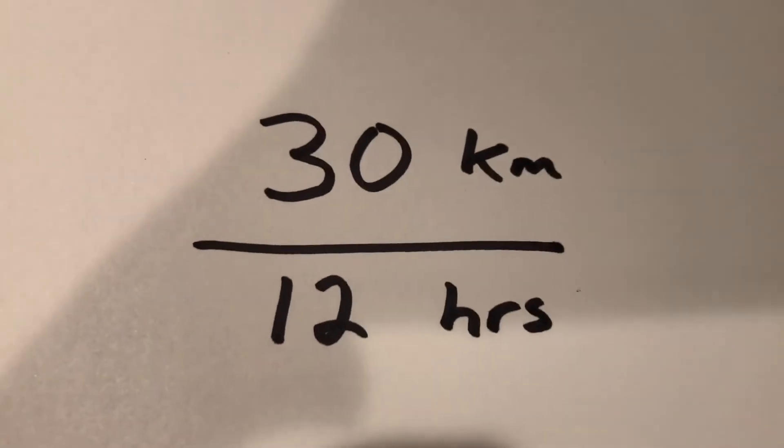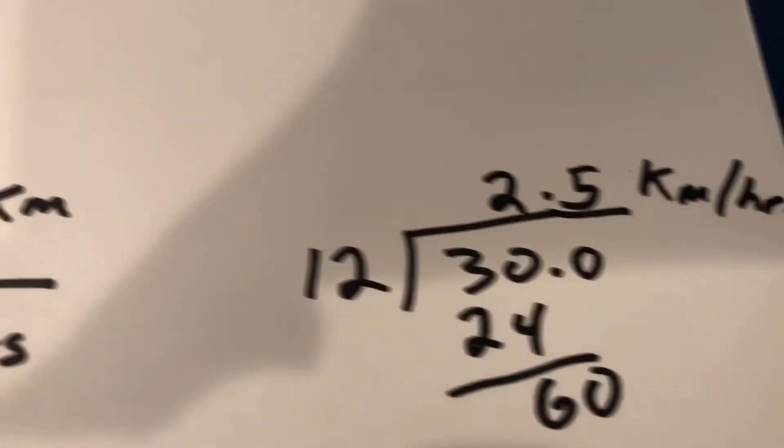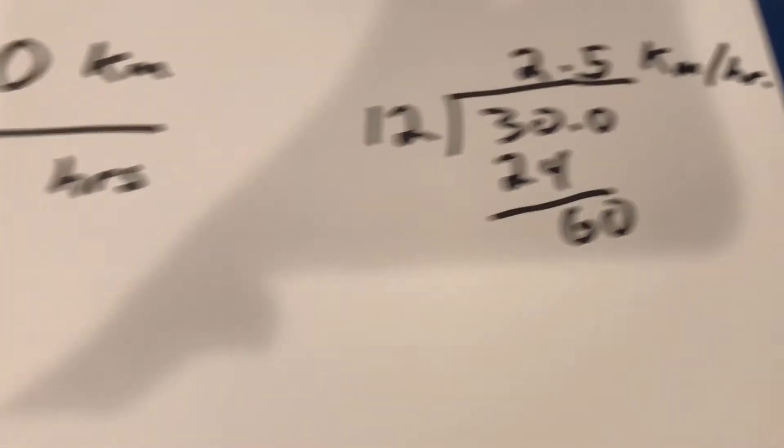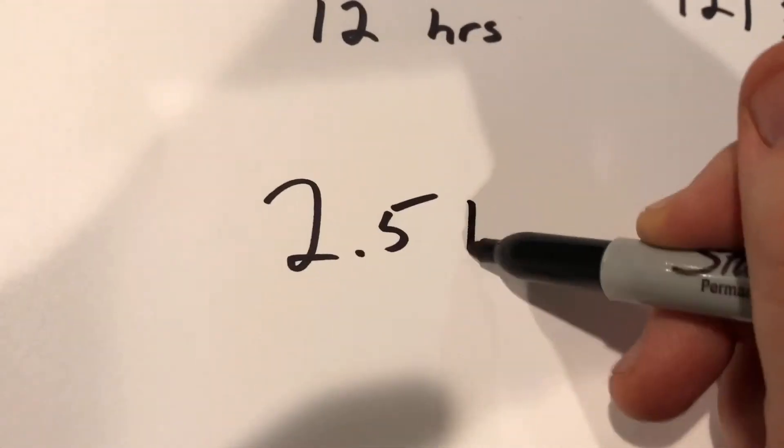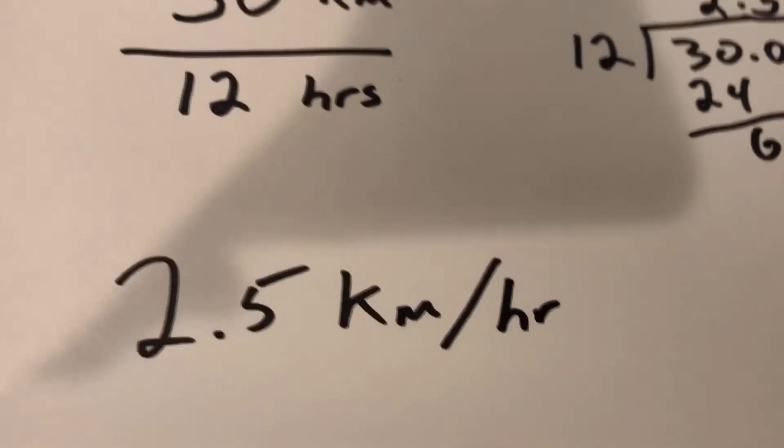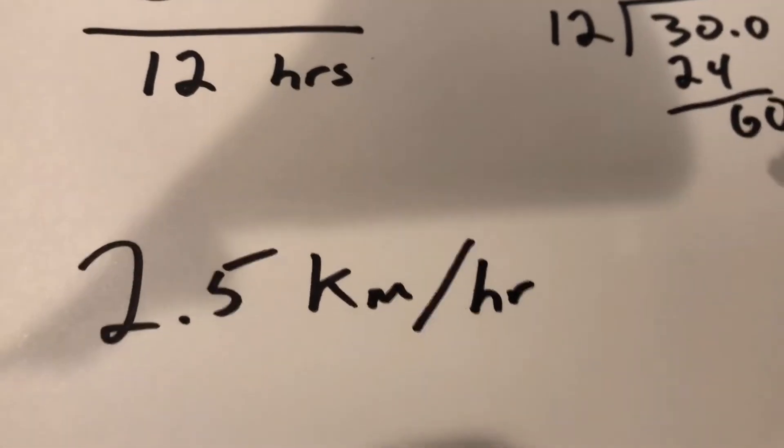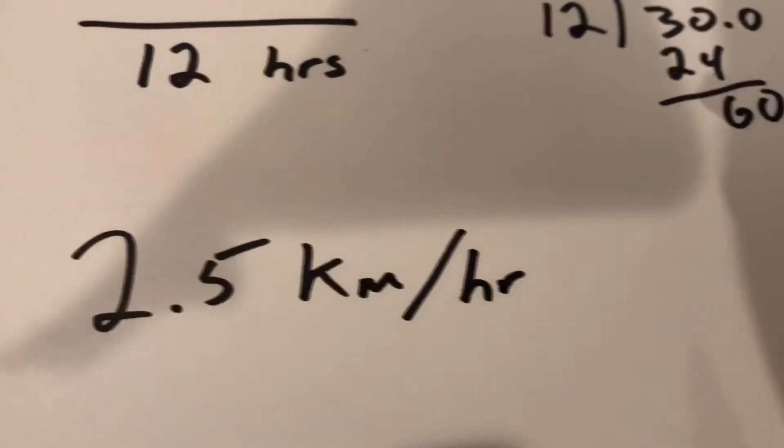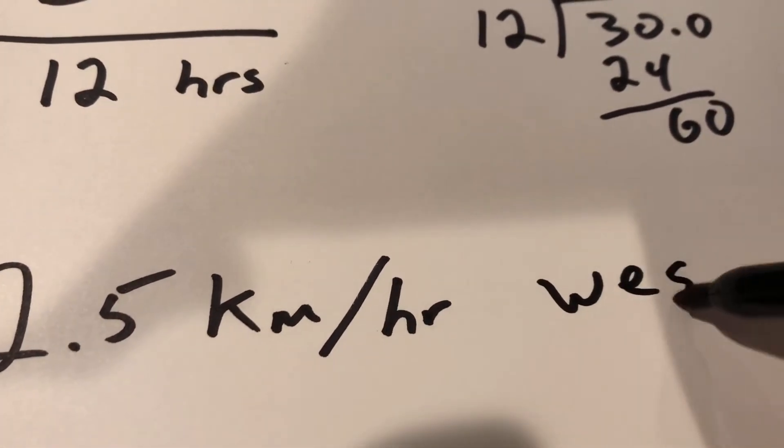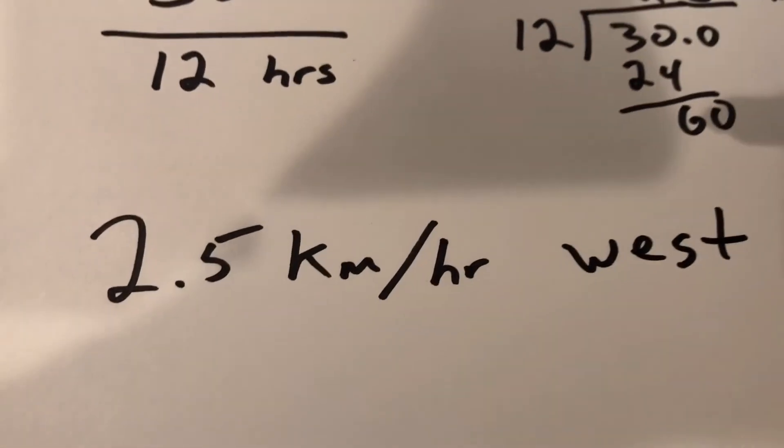If you travel 30 kilometers in 12 hours, you are walking at a rate of 2.5 kilometers per hour. That's your speed. Hold on. 2.5 kilometers per hour. Now that speed, if it were velocity, it would tell you the direction. Oh, you were headed west. Now it's a velocity.